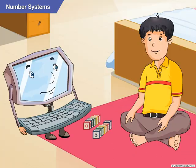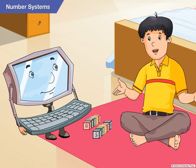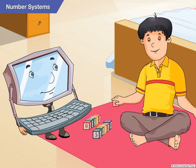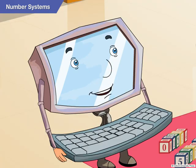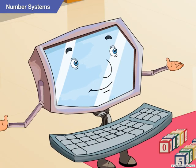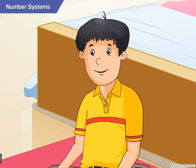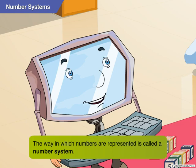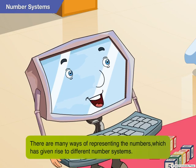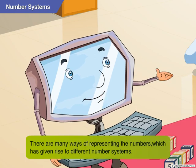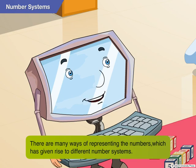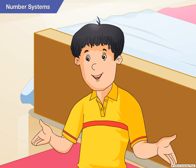Hey Goggle, what are you doing? I am arranging these number blocks in the right order. Do you know these numbers are used in different ways in different number systems? What's a number system? The way in which numbers are represented is called a number system. There are many ways of representing numbers, which has given rise to different number systems. What are the different number systems?